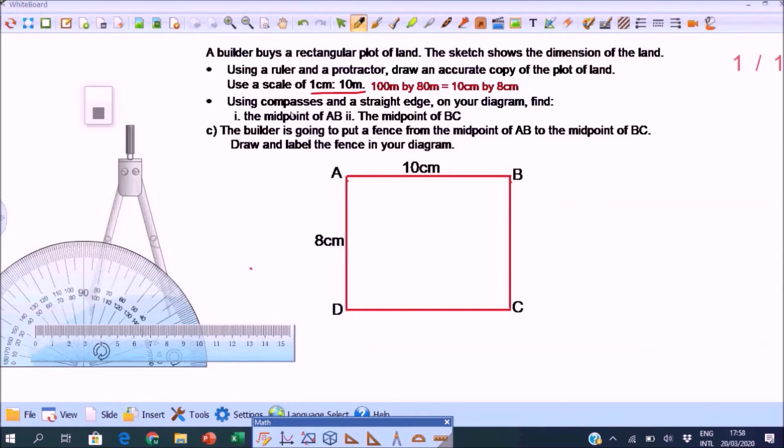Now let's use compass and straight edge. And we will find the midpoint of AB, and the midpoint of BC. So let's start with the midpoint of AB. Compass needle on B. Open the compasses. More than half of AB. Draw large arc.